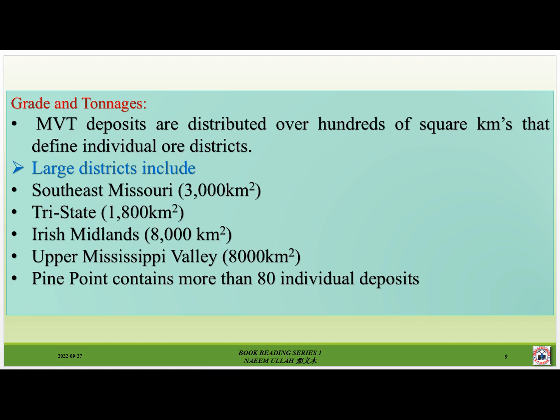MVT deposits are distributed over hundreds of square kilometers that define individual ore districts. Large districts include southeast Missouri at 3,000 square kilometers, Tri-State at 1,800 square kilometers, Irish Midlands at 8,000 square kilometers, upper Mississippi Valley at 8,000 square kilometers, and Pine Point, which contains more than 80 individual deposits.